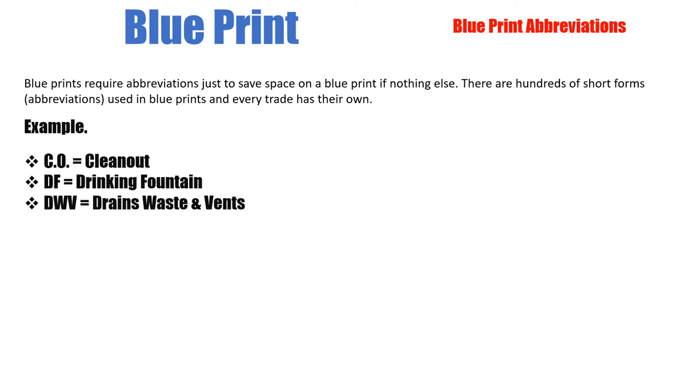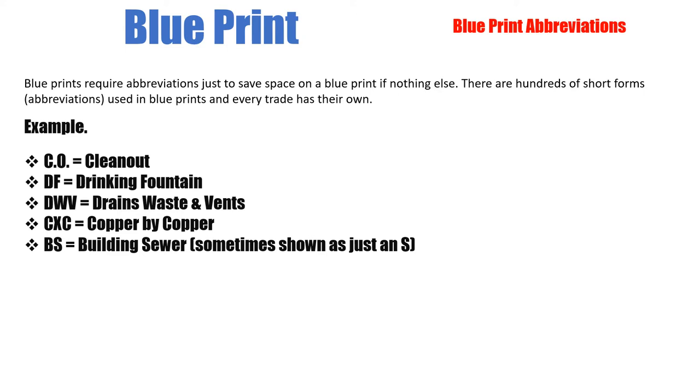DF stands for drinking fountain. DWV stands for drains, waste, and vents. CxC stands for copper by copper. BS is a building sewer, sometimes shown as just an S. BD is the building drain.